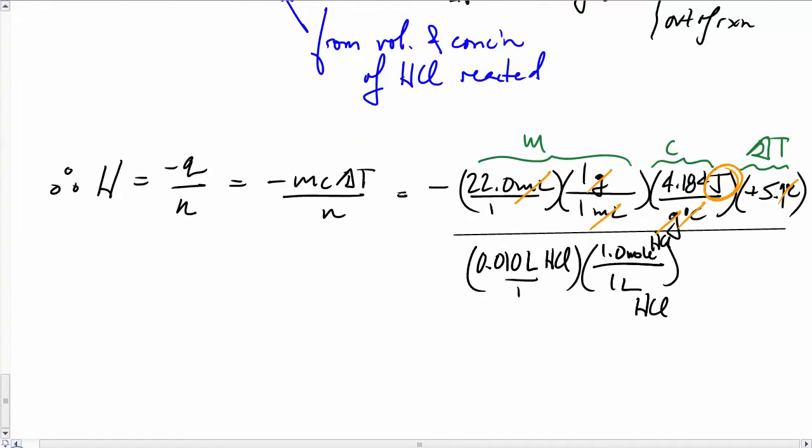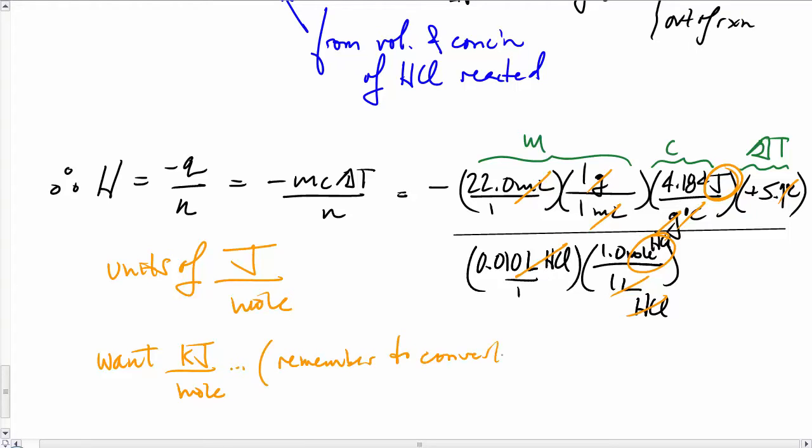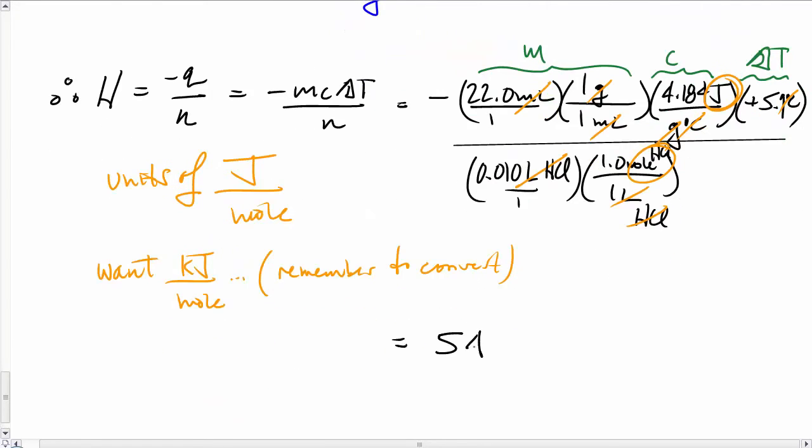The top calculation is in joules, and on the bottom, we wind up with moles. Remember, ΔH needs to be in units of kilojoule per mole. That's what we want. So we'll have to convert these joules into kilojoules for our final calculation.